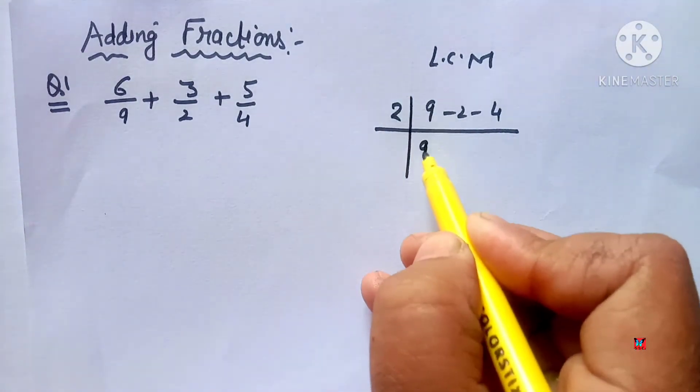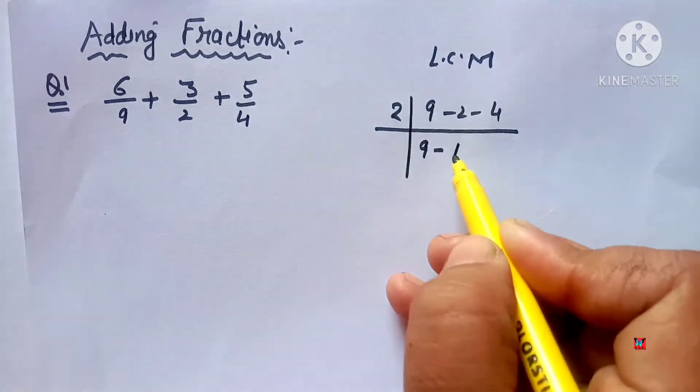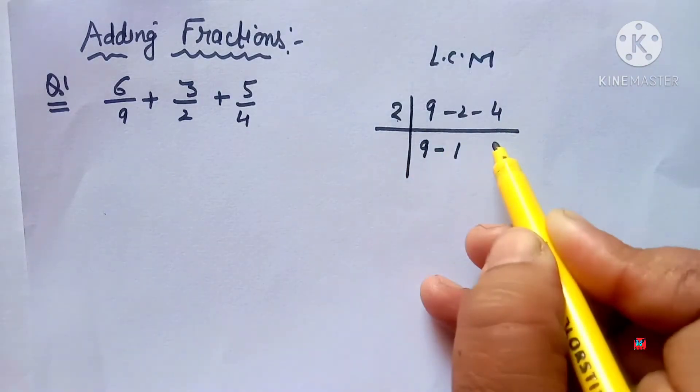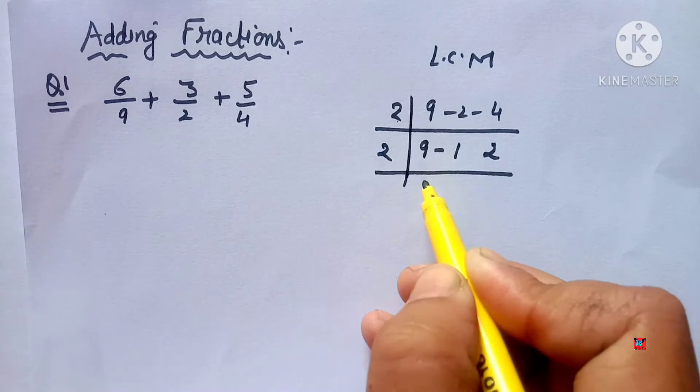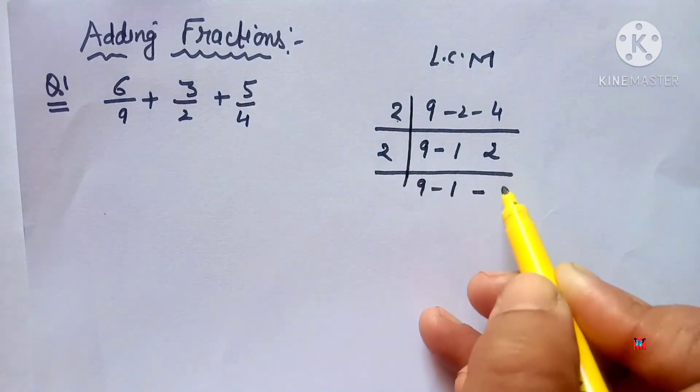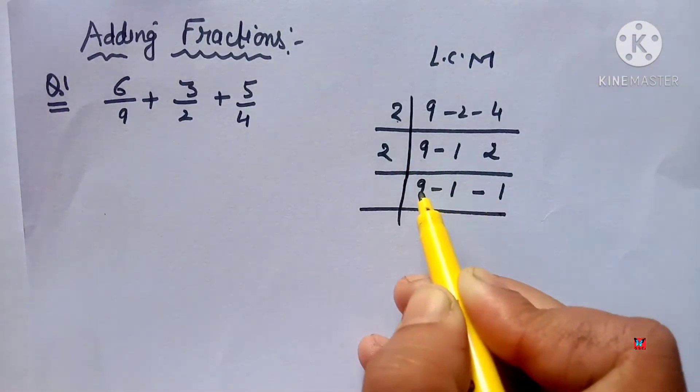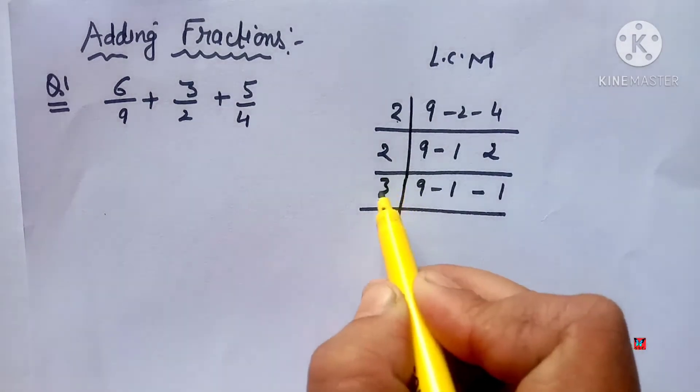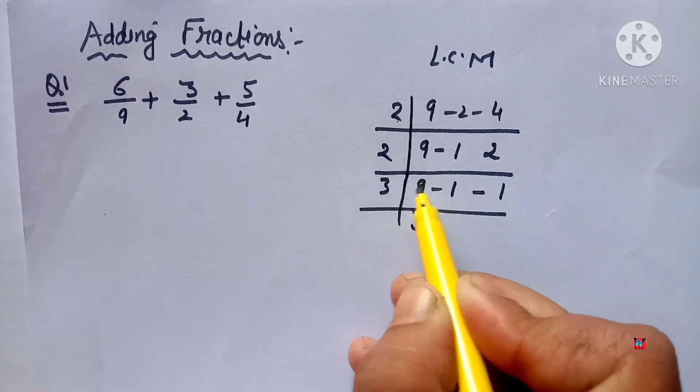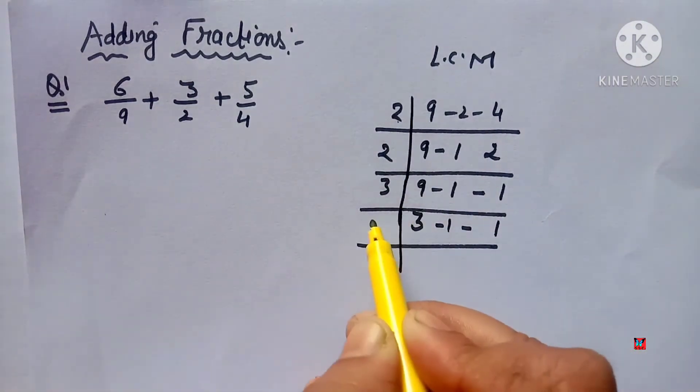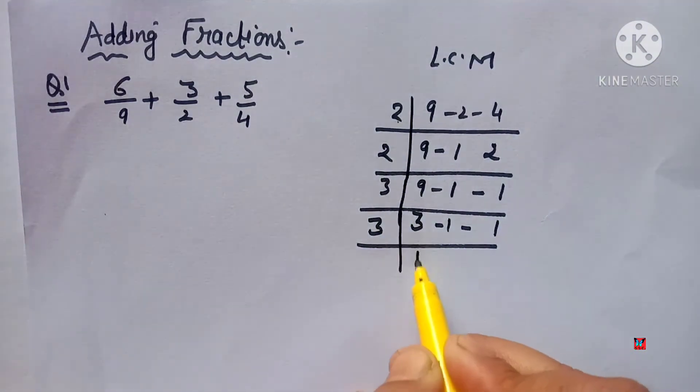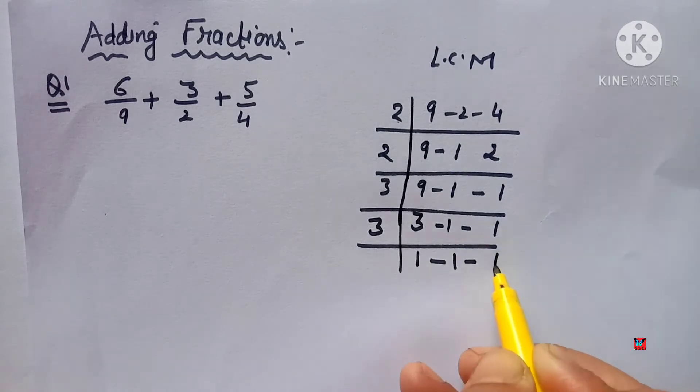1 as it is, 2 ko 2 se divide kia gives 1. From 9 divide by 3, so 9 divided by 3 gives 3. Then 3 divided by 3 gives 1, 1 as it is, 1 as it is. Then divide by 3 again, 3 ko 3 se divide kia gives 1, 1 as it is.